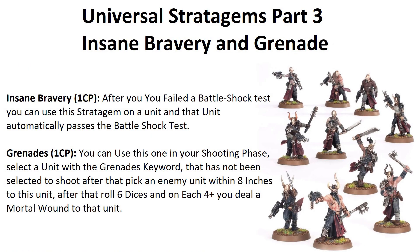Insane Bravery: when you fail a battle shock test in your command phase, spend one command point and the unit automatically passes — it can be game-changing. Grenades: in your shooting phase, select one of your units with the grenades ability, then select a visible enemy unit within 8 inches. Roll 6 dice — on each 4+, that enemy unit suffers 1 mortal wound, averaging around 3 mortal wounds per use.